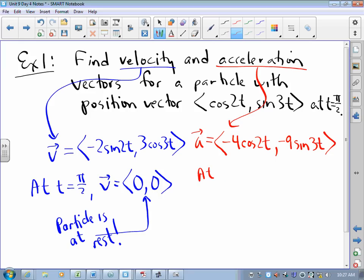So at time equals pi over 2, the acceleration vector is, well, cosine of pi is negative 1, so that's a 4. Sine of 3 pi over 2, that's negative 1, got a 9.